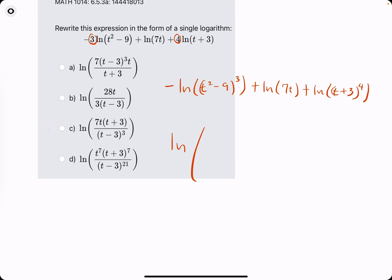Now we can write everything into a single natural log. Any terms that have the positive ln, we will write their insides up top. So 7t times (t + 3)^4. And then any term that had the negative exponent, we will write their insides on the bottom.